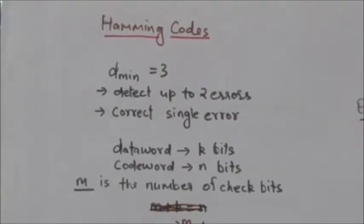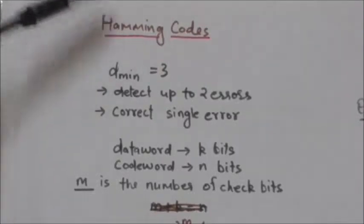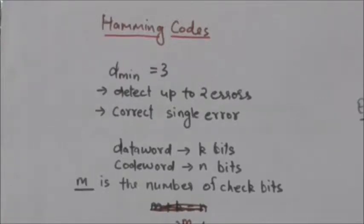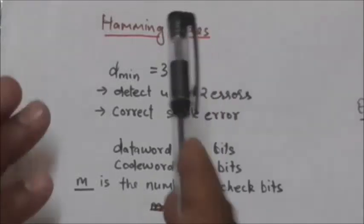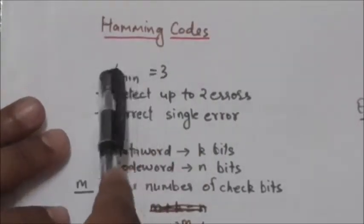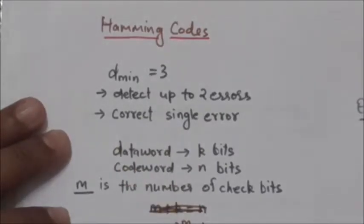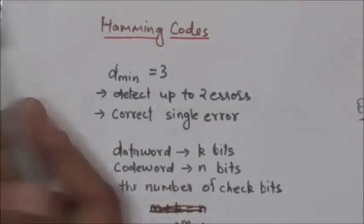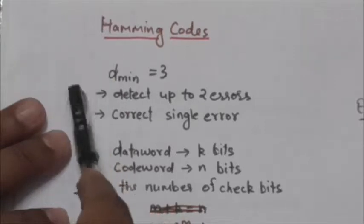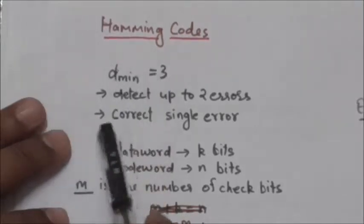Hello friends, welcome back. In this tutorial we will study about Hamming codes. In the previous tutorial we studied about Hamming distance and minimum Hamming distance. Now, what are Hamming codes? Hamming codes are error correcting codes, and here we will discuss the Hamming code with minimum Hamming distance 3. dmin represents minimum Hamming distance.